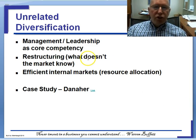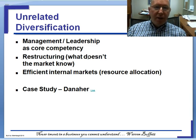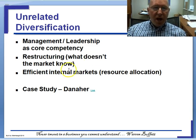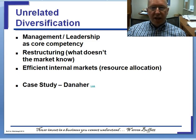Then you get into the idea of restructuring. Sometimes unrelated diversification is about restructuring — identifying likely candidates such as antiquated businesses that are not up to date, or businesses in the middle of a downturn that have been allowed to deteriorate. But a lot of the unrelated diversification philosophy is about efficient internal markets and resource allocation. I encourage you to take a good look at that section of the textbook.